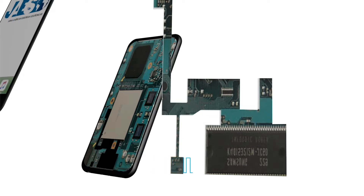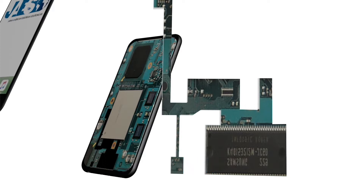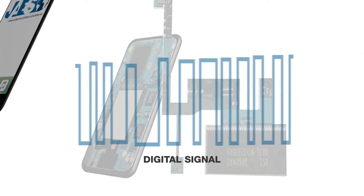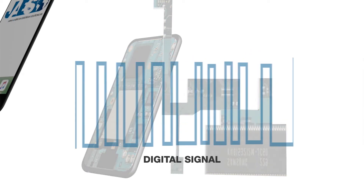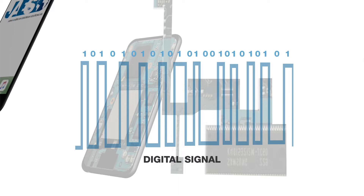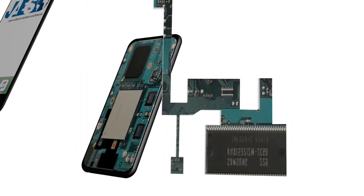Once the sound wave of your voice has been transformed into an electrical signal, this signal is sampled by a tiny sensor inside the phone called a MEMS sensor. This sensor samples the electric wave of your voice many times per second and digitizes it. We thus pass from the analog world to the digital world, as the wave is converted into discrete values represented by a sequence of zeros and ones.